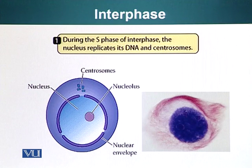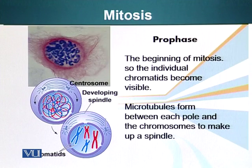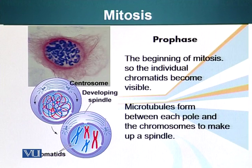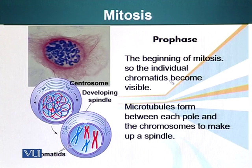Let's look at the first stage of mitosis: prophase. This is the beginning of mitosis. The individual chromatids become visible, and microtubules form between each pole and the chromosomes to make up a spindle.